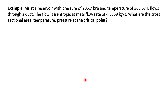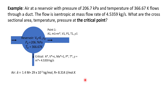Next example: air at a reservoir with a pressure of 206.7 kilopascal and temperature of 366.67 Kelvin flows isentropically through a duct at a mass flow rate of 4.5359 kilogram per second. Find the cross-section area, temperature, and pressure at the critical point. At the critical point, velocity equals the speed of sound and Mach number equals 1.